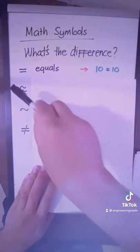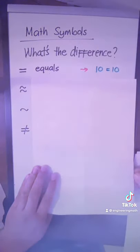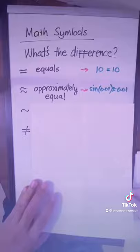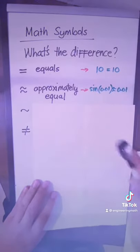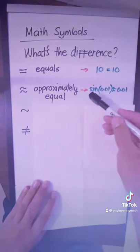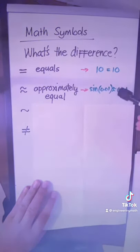The second one means approximately equal. For example, the sine of 0.01 is approximately equal to 0.01.